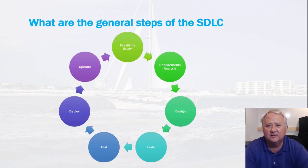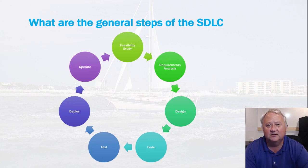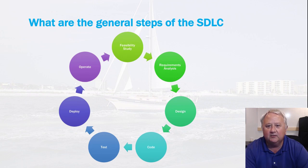The SDLC is presented as a cycle. It starts with the feasibility study, then moves on to requirements analysis, followed by design, then coding, testing. The software is actually deployed in production, and then it goes into an operational phase. Following that, another release may be planned, and so the whole cycle will begin to repeat itself as new requirements are developed, potentially a new feasibility study, and the entire cycle would start over again.